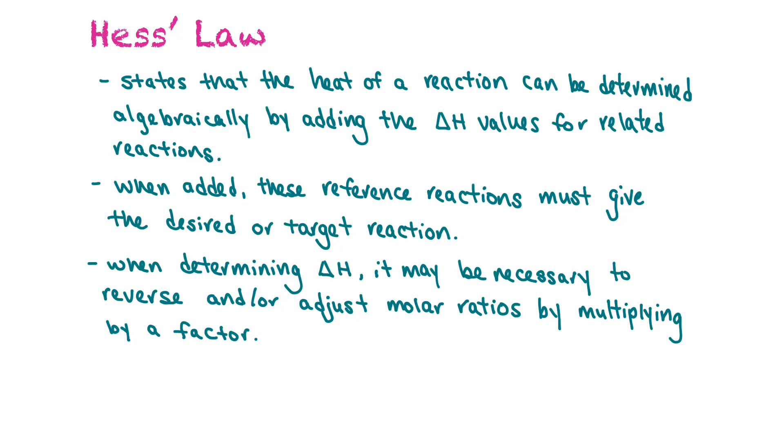Hess's law states that the heat of a reaction can be determined algebraically by adding the delta H values for related reactions. When added, these reference reactions must give the desired or target reaction. And when determining the delta H of the overall reaction, it may be necessary to reverse and or adjust the molar ratios by multiplying by a factor.